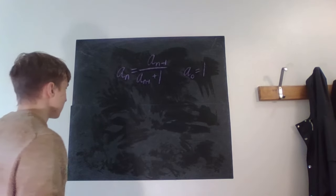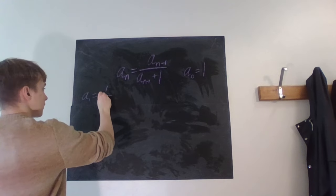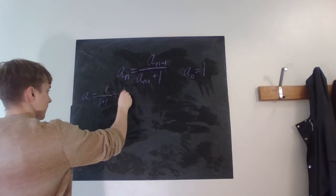So firstly, let's just try out some values. What is a_1 then? That is just one over one plus one, which equals one half.